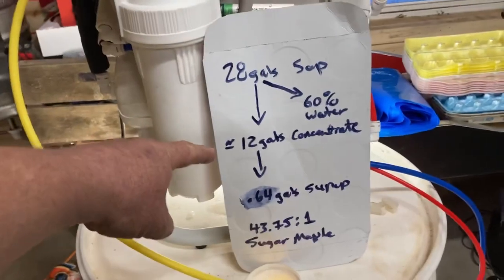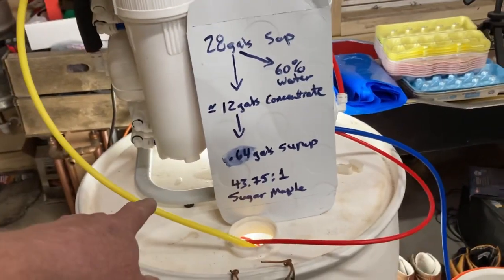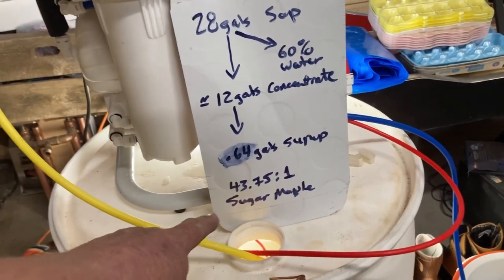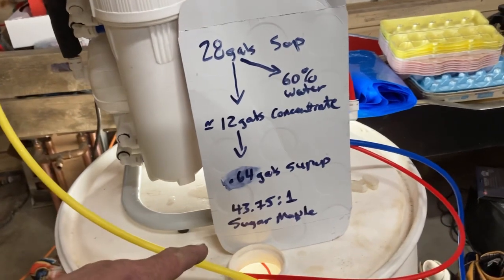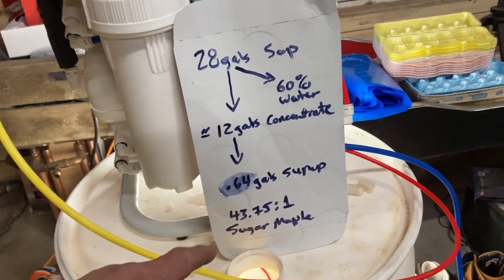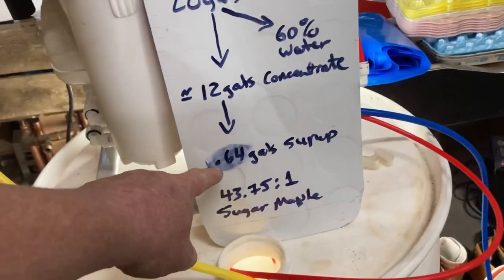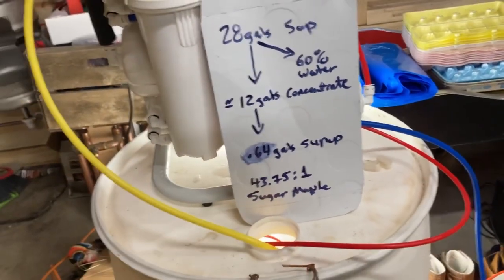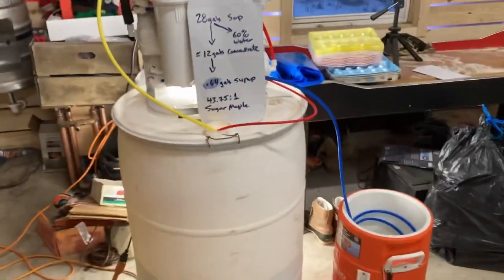So once we get down to 12 gallons, then we do our 43.75 to 1. I don't care what anybody says, it always works out to 43.75 to 1. We could start with 250 gallons of sap, and I can get to within four ounces when that refractometer hits 66%. So it's going to give us 0.64 gallons of syrup out of this 28 gallons. So basically that's how you do it.